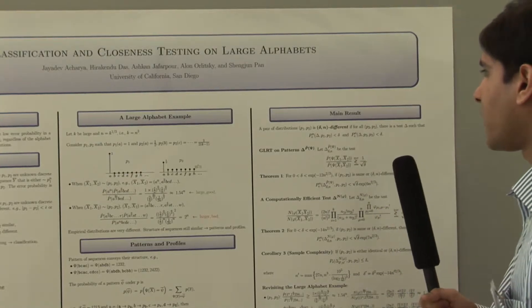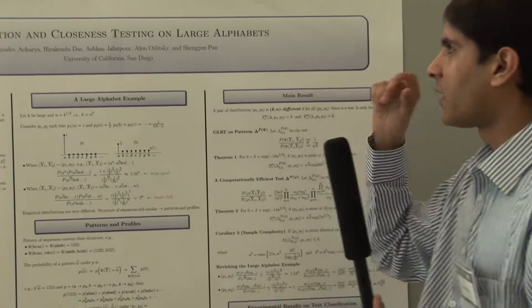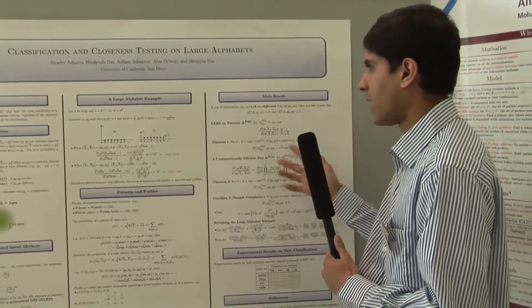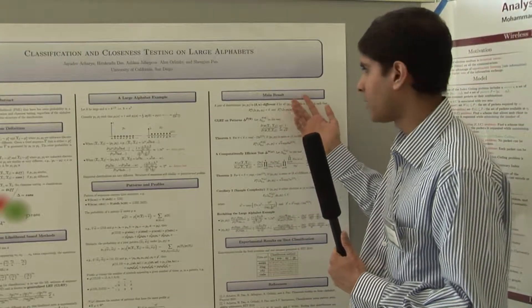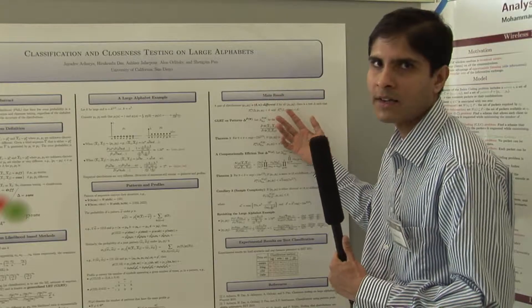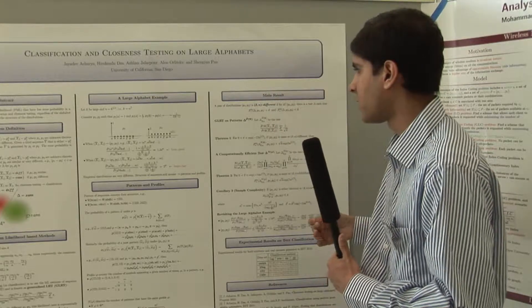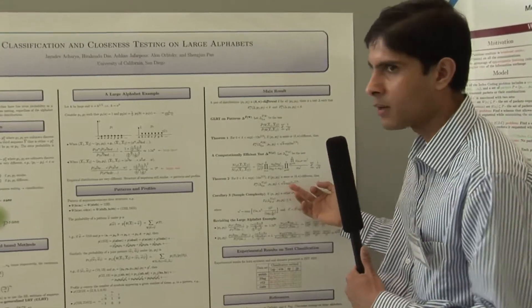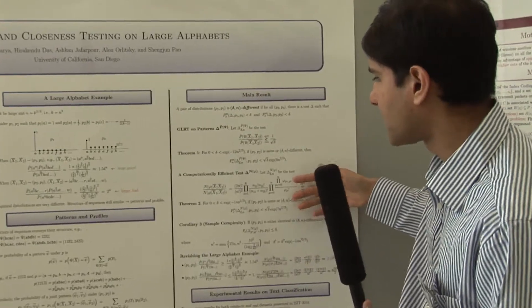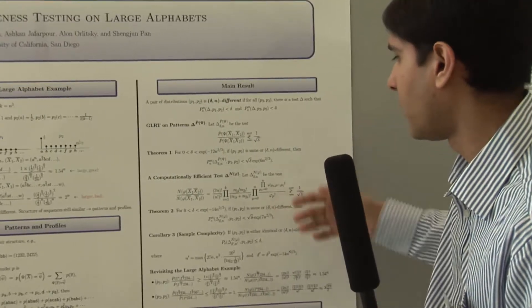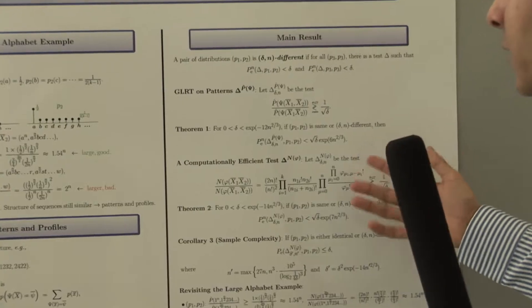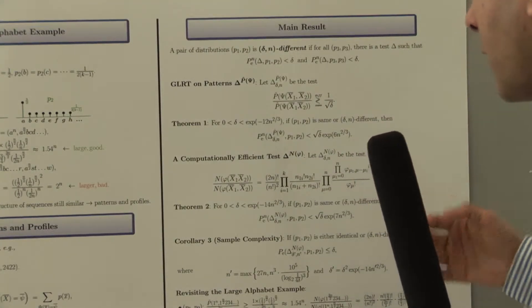And this is our main result. What we claim for the problem of classification and closeness testing is that as long as anyone can distinguish two distributions with error probability less than delta using n samples, we can also get an error probability which is close to it. We can get an error probability of square root delta times a factor which is sub-exponential in the sample size n. And we also have a computationally efficient test for doing the same.